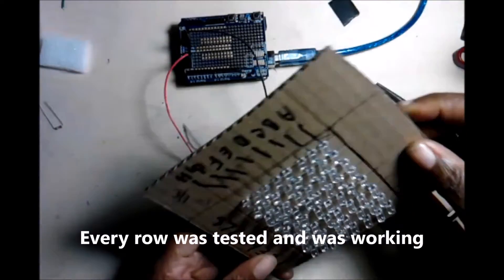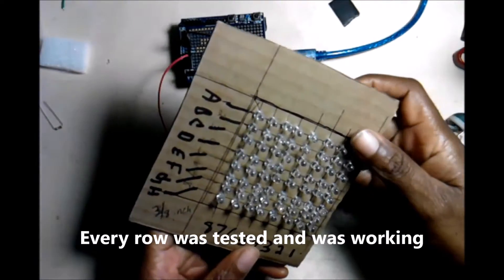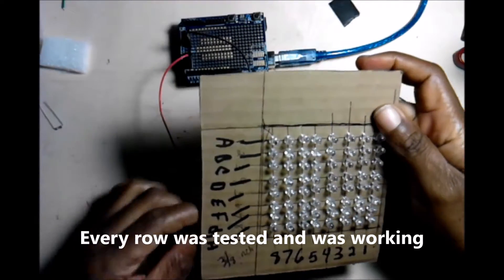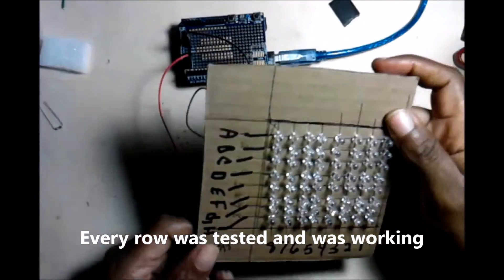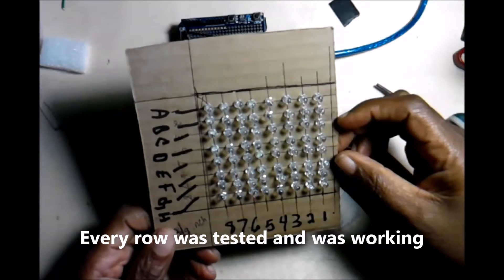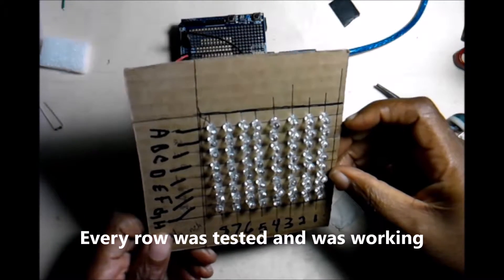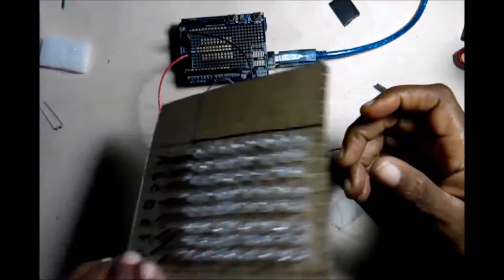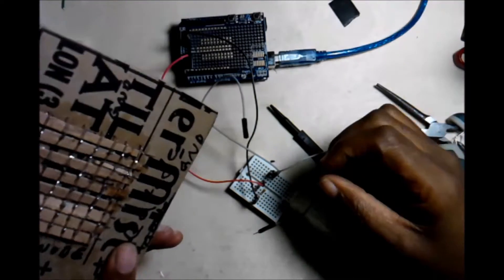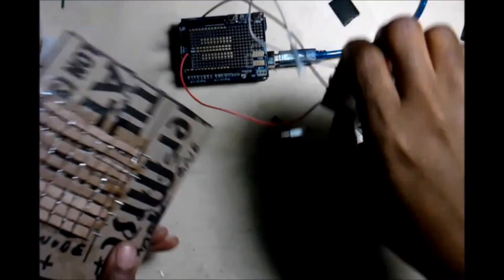So it looks like everything is working, doesn't look like there's any shorts, but you won't be able to actually see that until we start testing out the grid through the microcontroller.